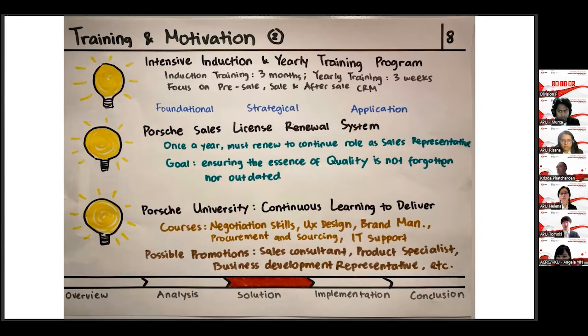The next proposal is the Porsche Sales License Renewal System which requires sales executives to renew once a year to ensure that the essence of quality is not forgotten nor outdated. Lastly, we'd like to propose the Porsche University where those who are ambitious can learn additional skills for possible promotions. For example, an employee can take a UX design course in this university for upgrading to a website sales manager position.